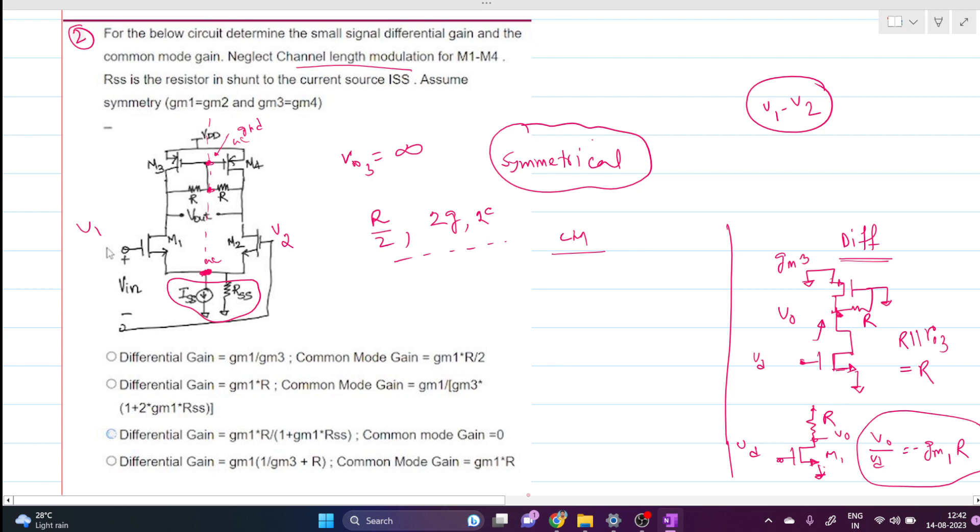For that, we can redraw our circuit as follows. This is incrementally zero like Vdd. Then we have this resistance, and this resistance value will be R by 2. This will be 2gm3. This will be our Vcm, common mode small signal. As we are in small signal model, this Iss source is inactive, so there is only Rss.